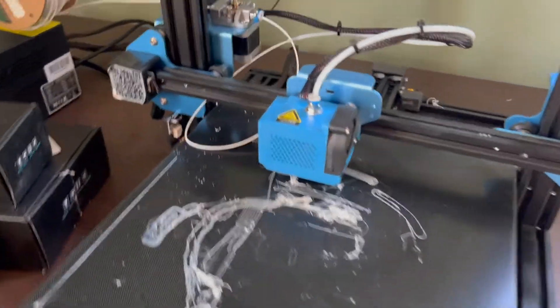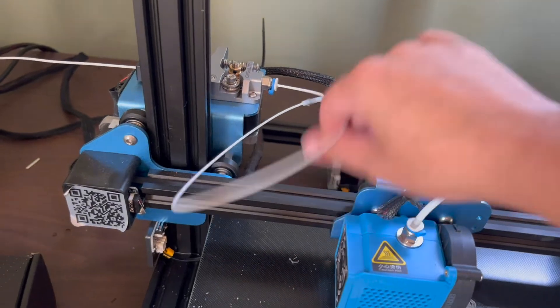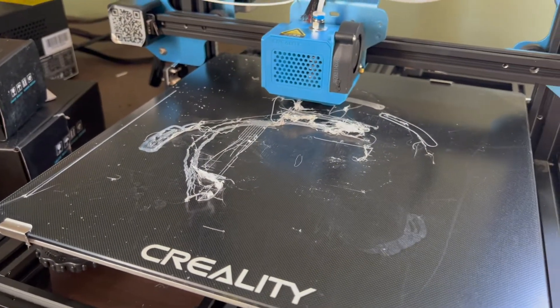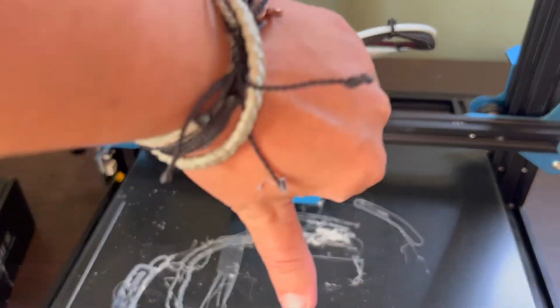All right, so today I will be teaching you how to change the Bowden tube on a 3D printer. This is a relatively easy process. My tube has been damaged and one of my clamps has also been stripped, so I need to remove this and replace it as well.